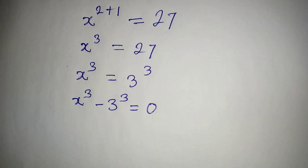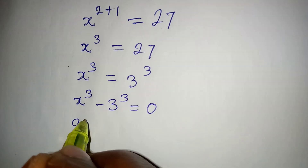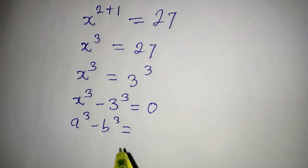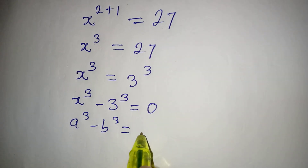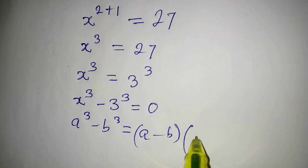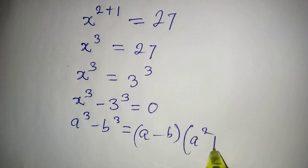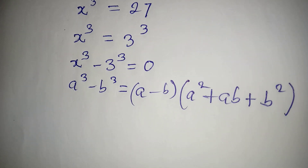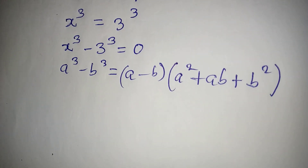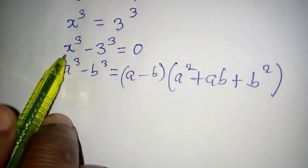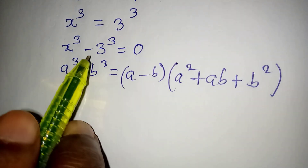Okay, from here, let's apply this standard: a to the power of 3 minus b to the power of 3 is equal to (a minus b) into (a squared plus ab plus b squared). So this is a standard we shall follow, where our a will be x and our b will be 3.